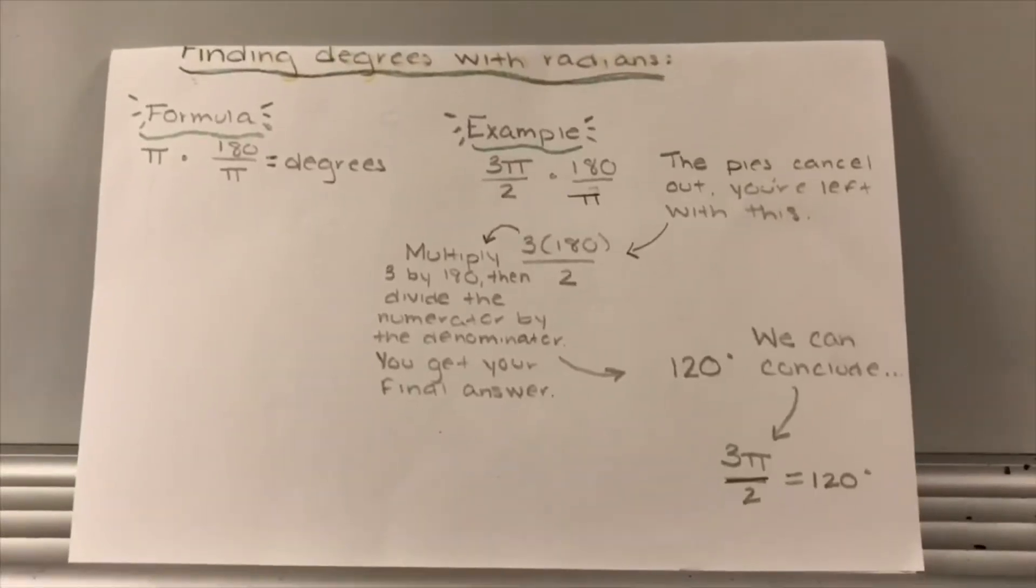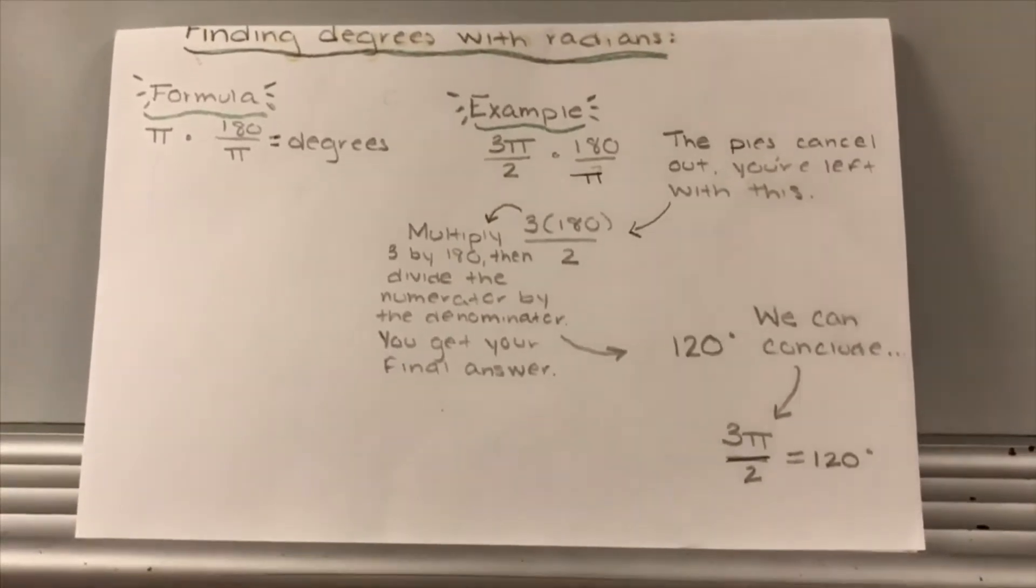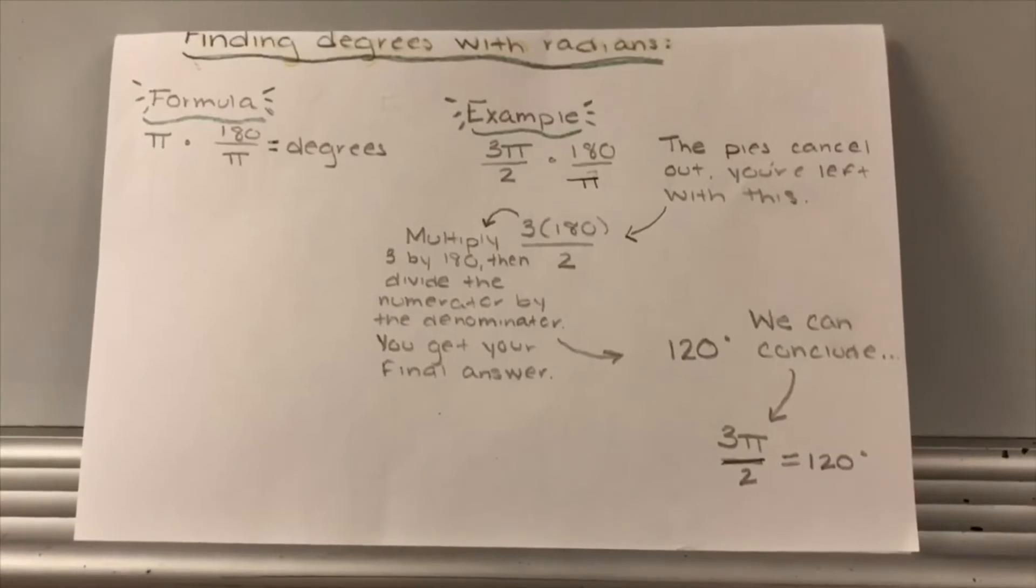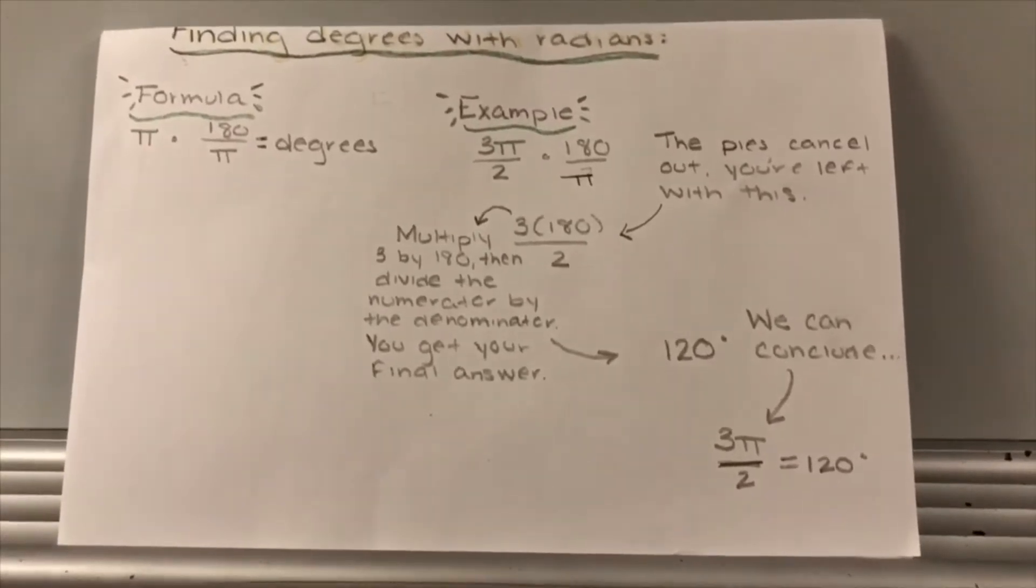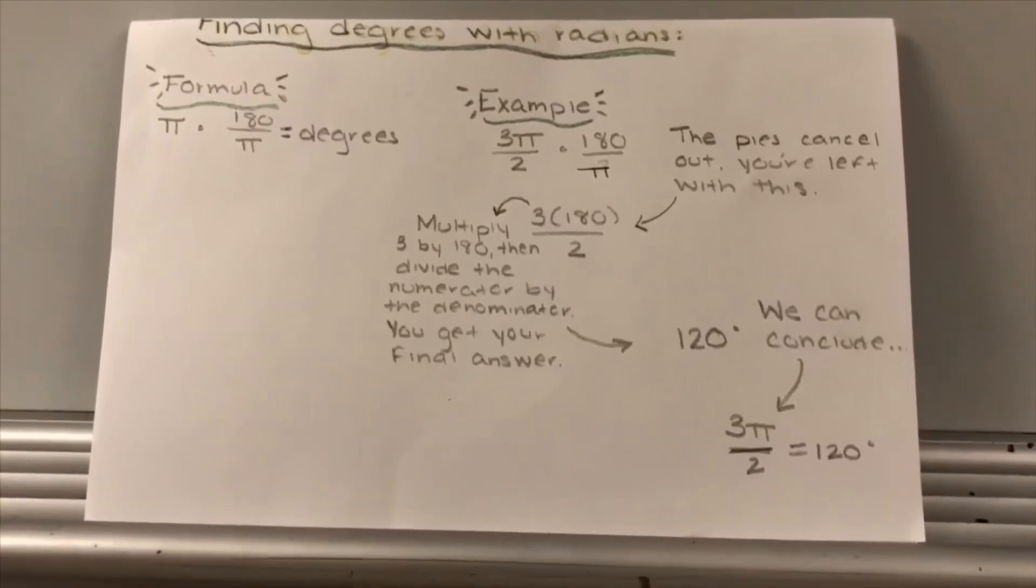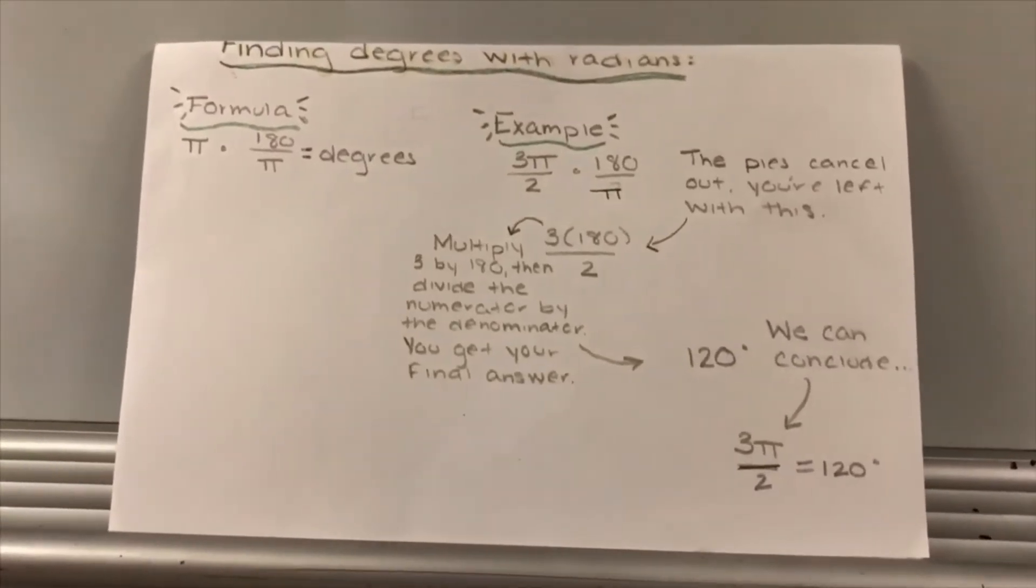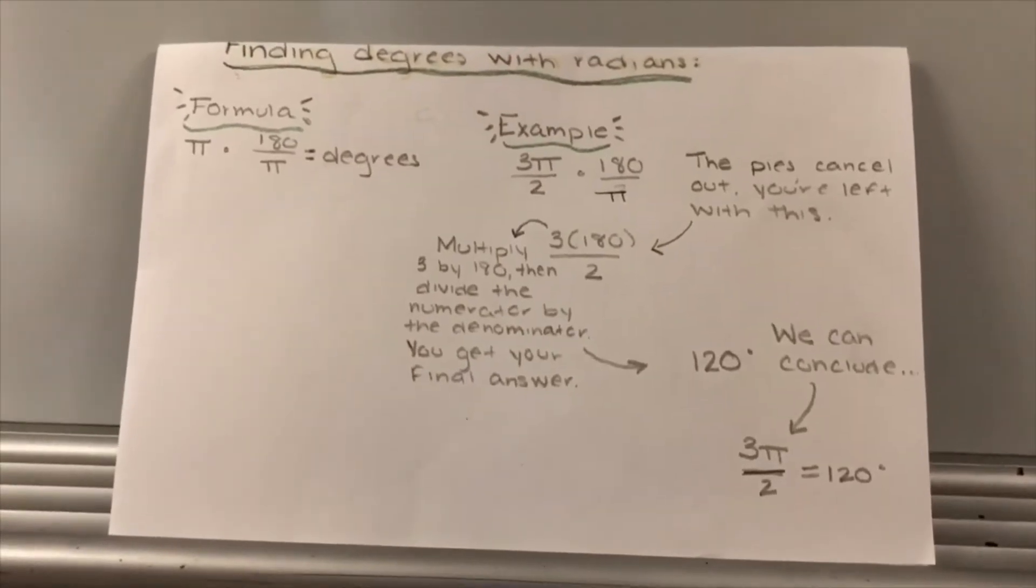The formula for finding degrees with radians is π times 180 over π, which equals degrees. An example is 3π over 2 times 180 over π. The π's cancel out and you're left with 3 times 180 over 2. Then multiply 3 times 180 and then divide by 2 and you end up with your answer.